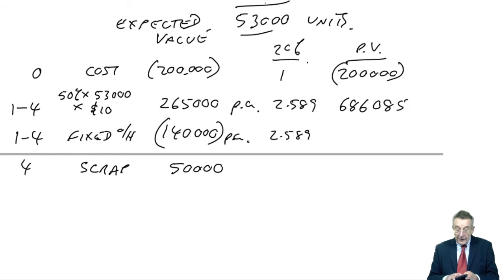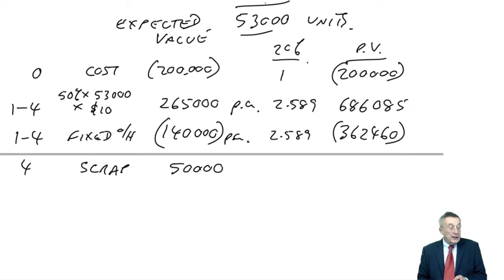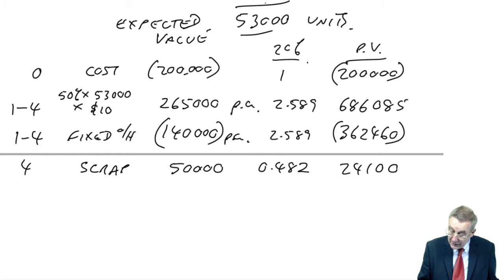And the present value of the fixed overheads, £140,000 a year, £362,460. And finally, the present value of the scrap, the ordinary discount factor at 20% for four years, it's 0.482. And so what does that come to? £24,100.